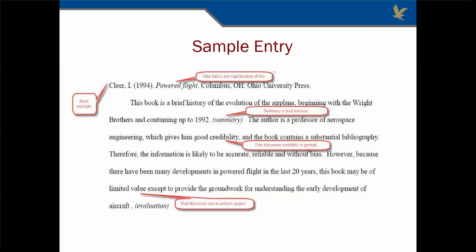Here is a sample entry. This entry is for a book. Notice how the book title is capitalized and italicized. The summary is very brief — in this case, just one sentence. The evaluation speaks in general to the source's credibility, but ultimately comes to the conclusion that the source is of limited use in this project. That is certainly a reasonable conclusion. Do not feel like you must love every source. As a reminder, you do not have to label the summary and evaluation as seen here, unless specifically directed by your instructor.